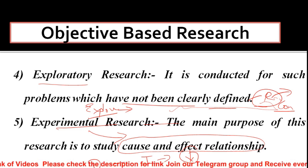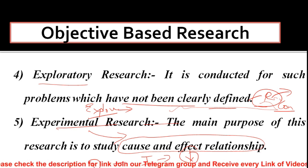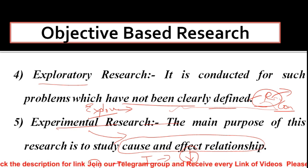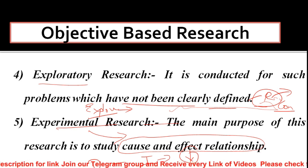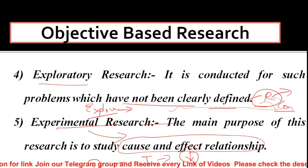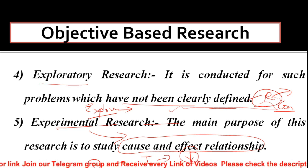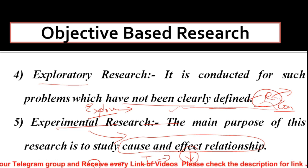Quick revision of objective-based research: सबसे पहला था descriptive - जिसमें ex-post facto, historical, और analytical। फिर correlational, explanatory, exploratory, और experimental। ये थे पाँच types of research in objective-based category।